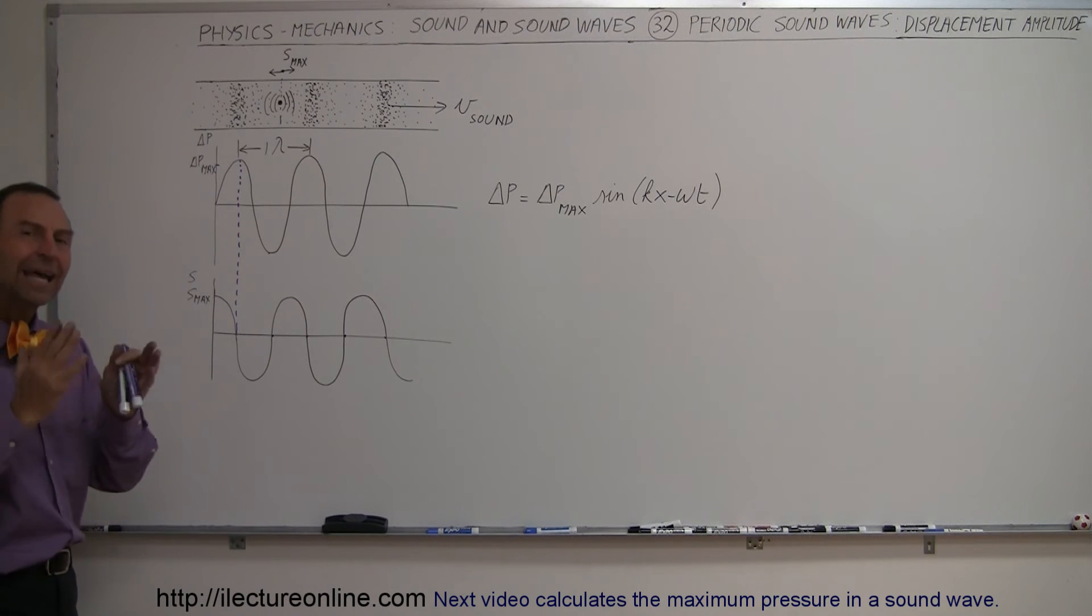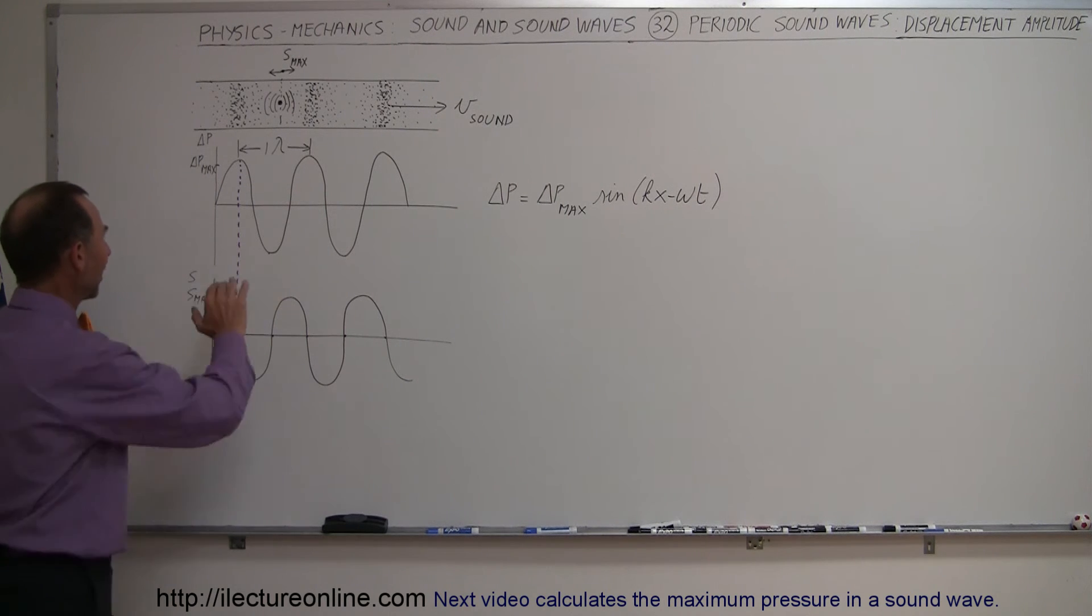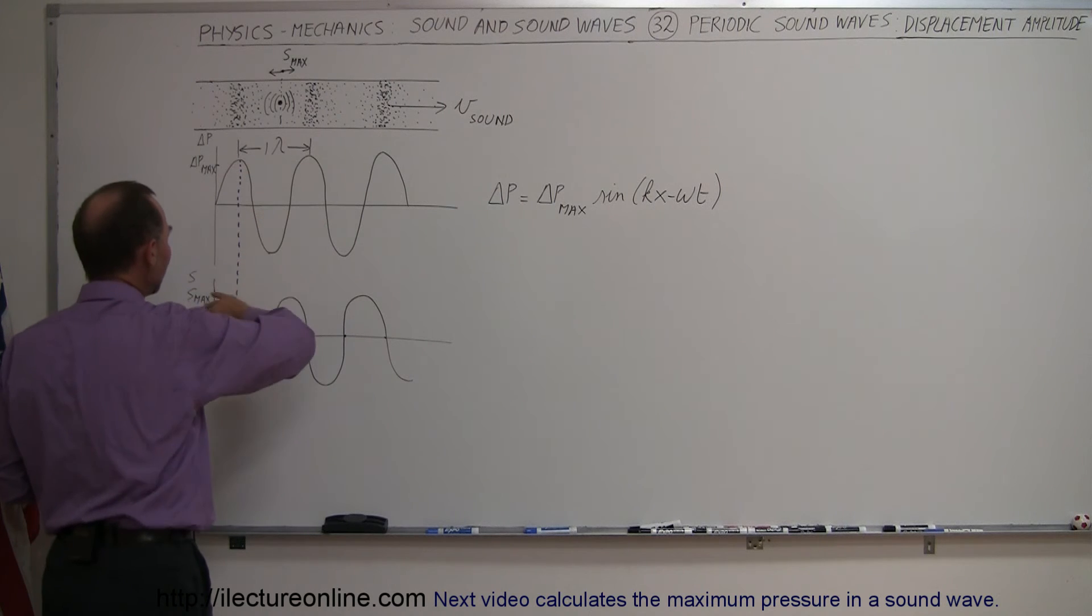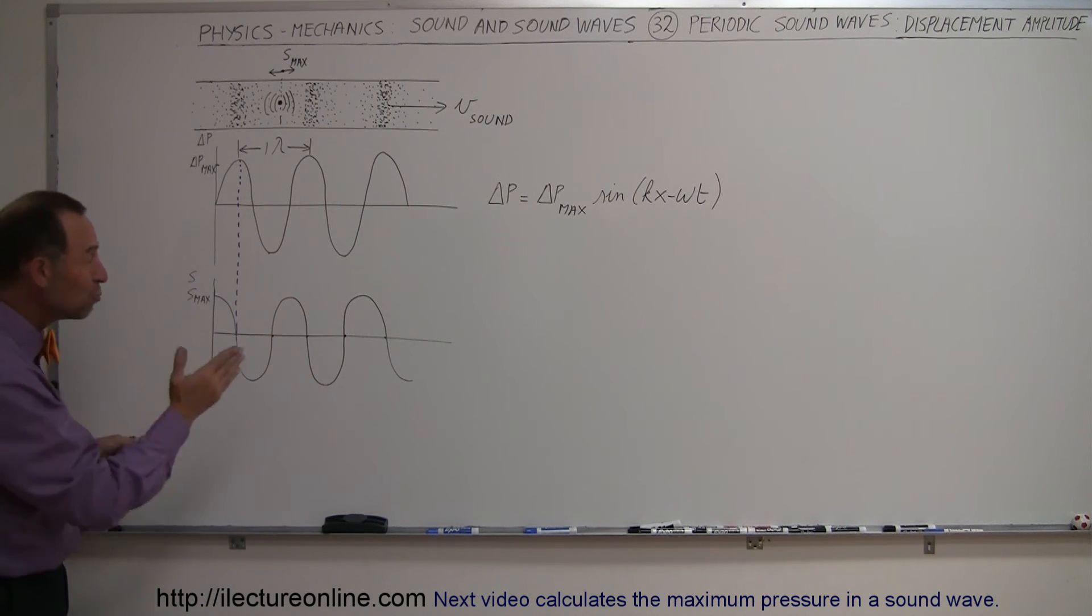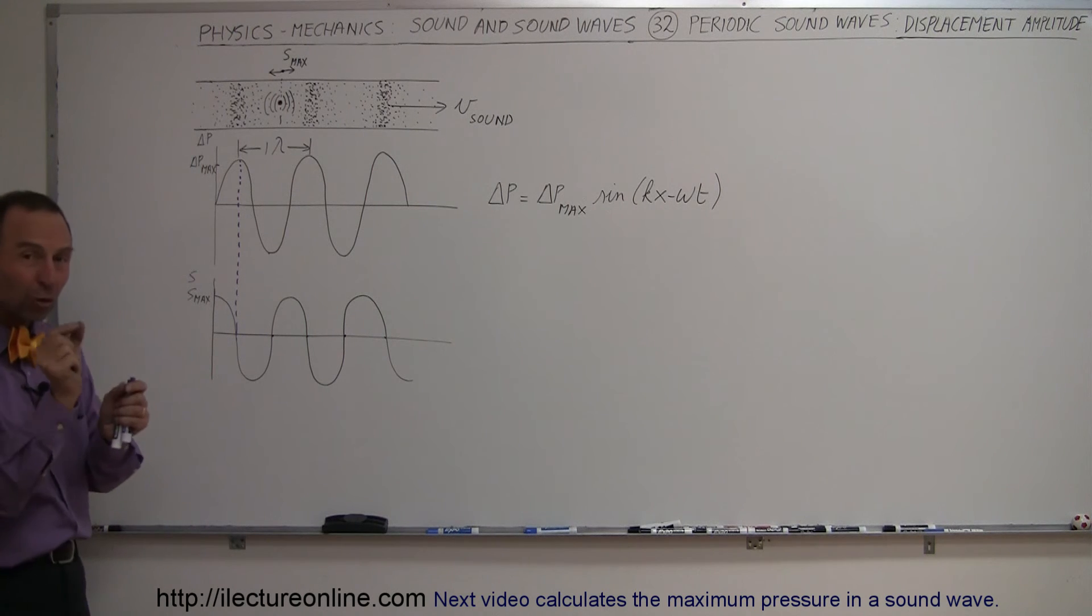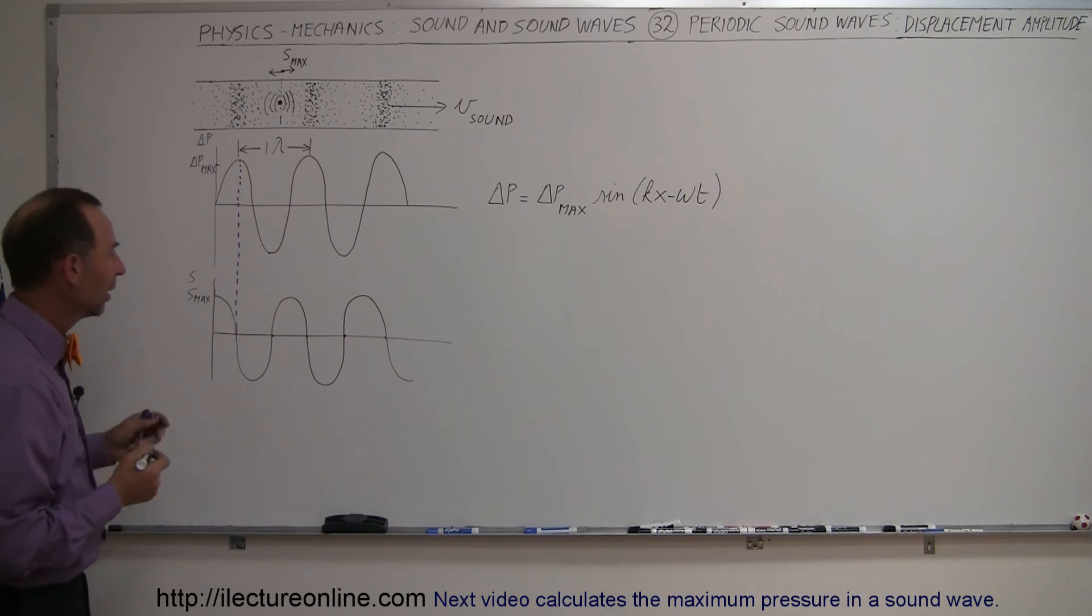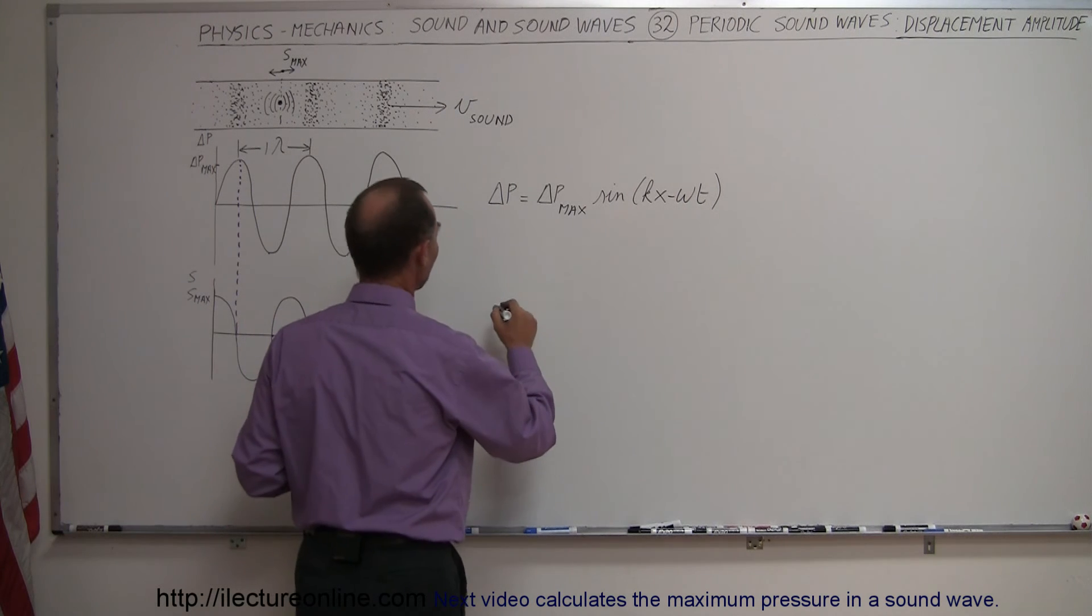They are in sync, but 90 degrees out of phase. So as this is a sine function, this then is a cosine function. So we can then describe the motion of the molecules within the air, and of course the motion is simply a vibrational motion back and forth, they actually don't move along the line of the sound wave.